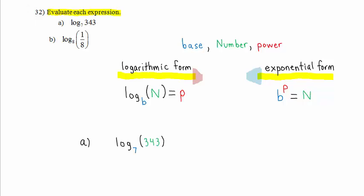In Part A, we have log base 7 of 343. Let's tack on the equal p to complete the logarithmic form. Now let's convert to exponential form. The base b raised to the p power is equal to the number n, which is 343. So the value of this expression, log base 7 of 343, is the unknown p in this equation here.